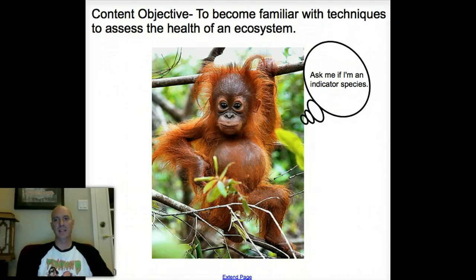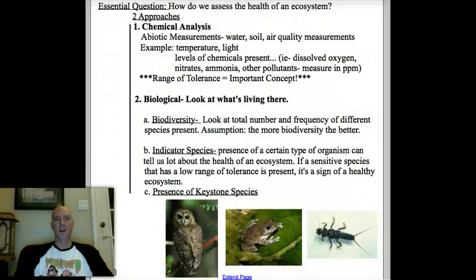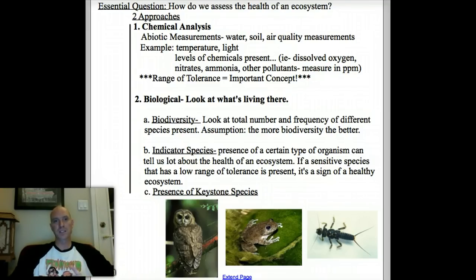Once again, it's a la Cornell. Our essential question is really, how do we assess the health? And we're going to take a two-pronged approach. The first one is going to be a chemical analysis, and then the second one is a biological analysis — a biological survey about what types of creatures are living there and what that tells us about the ecosystem.